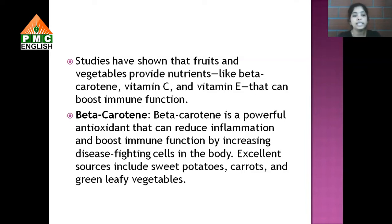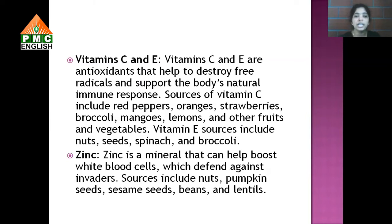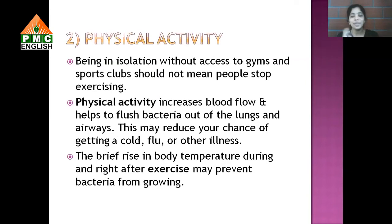Excellent sources of beta-carotene are sweet potatoes, carrots, and green leafy vegetables. Consuming green leafy vegetables on a regular basis is very important for immunity. Vitamin C foods include oranges, strawberries, mangoes, and lemon — drinking lemon honey water every day helps improve immunity. Zinc is another mineral that boosts WBCs; zinc-rich foods are nuts, pumpkin seeds, sesame seeds, and beans. Basically, consuming more fruits and vegetables over high-fat or non-vegetarian food improves our immunity.